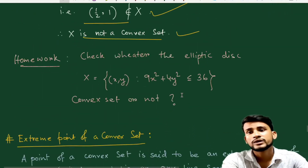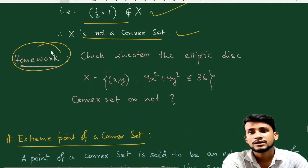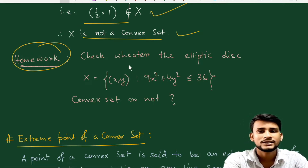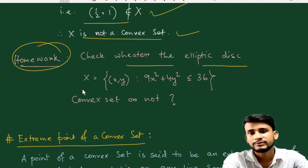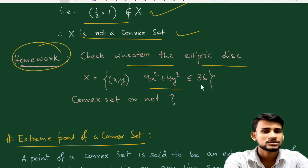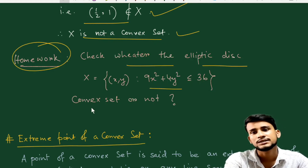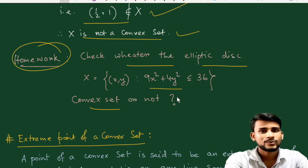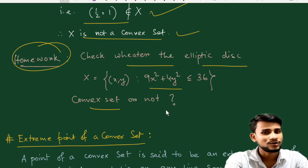Here is a homework problem for you: determine whether the set X = {(x, y) : 9x² + 4y² ≤ 36} is a convex set or not. You can check it and comment your answer in the comment section below.